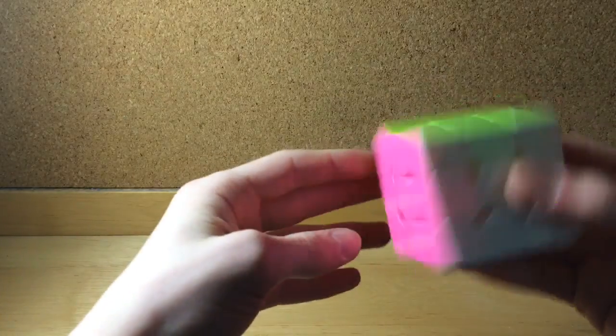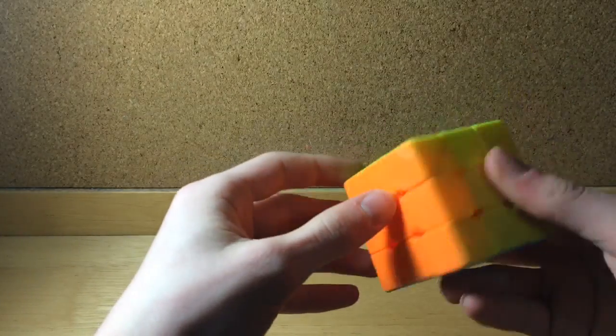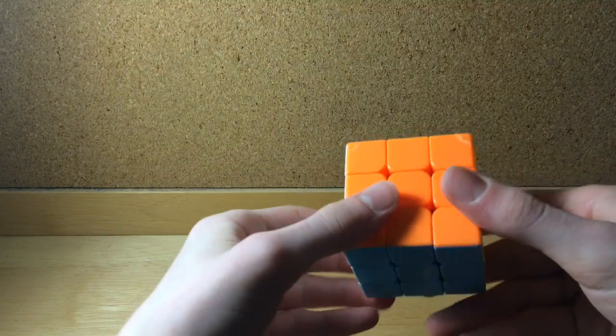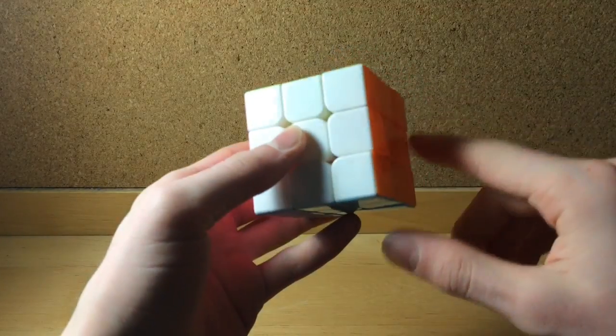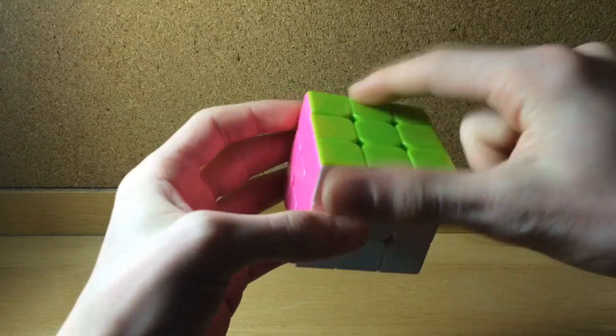Hey guys, I just found a cool little algorithm for the Rubik's 3x3 that is actually pretty useful and you can use it to flip these two edges and flip these two edges.